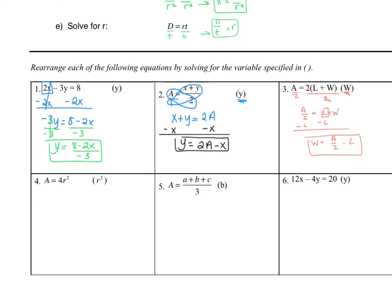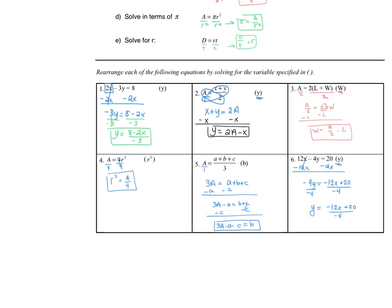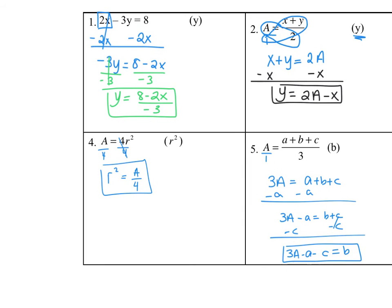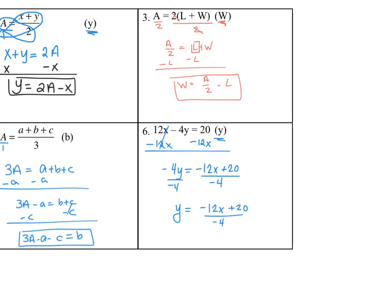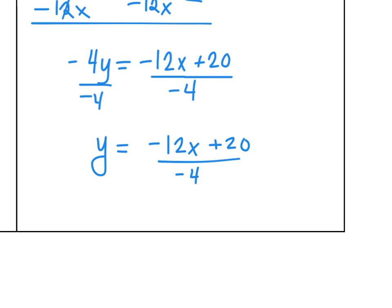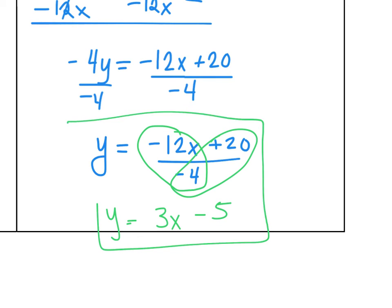Try to do the next three examples by yourself. So let's zoom out and see our final answers. For number 4, I divided both sides by 4, and I got r squared equals A over 4. For number 5, I cross multiplied and got 3A equals a plus b plus c, and then I subtracted my a and my b, and I got 3A minus a minus c equals b. And for our last example, I subtracted my 12x, I got negative 12x plus 20, and then I divided it by negative 4. And I got negative 12x plus 20 over negative 4. You can leave it like this as your final answer, or you can simplify it further. I get y equals negative 12 over negative 4 is positive 3, so I get 3x, and 20 divided by negative 4 is a minus 5. So you can write it as this as well. Both are 100% correct.